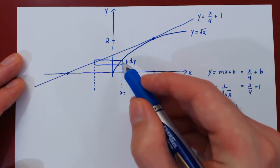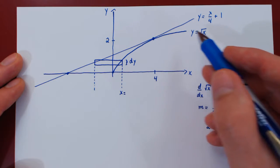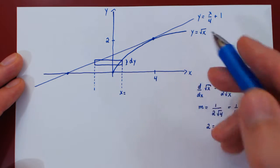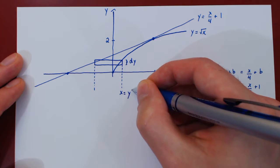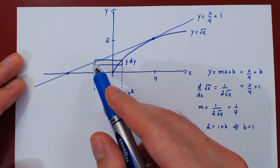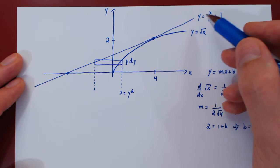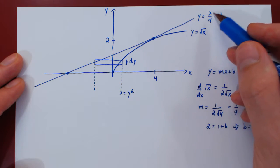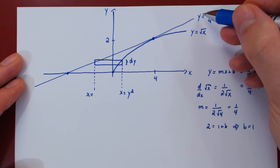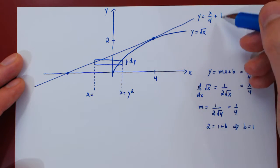At the right-hand point we are on the square root function. So if y equals root of x, squaring both sides gives x equals y squared. At the left-hand point we are on the tangent line: y equals x over 4 plus 1. Isolating x — subtract 1, multiply by 4 — so x equals 4 times (y minus 1).